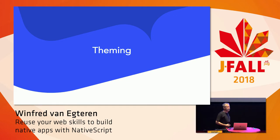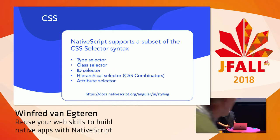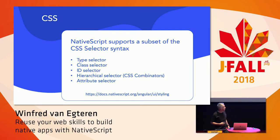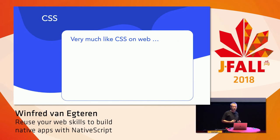Now you know how to build your user interface — it's time to apply styling. Styles can be set on three different levels: application-wide, component-specific, and inline styling — exactly the same as on the web. NativeScript supports a subset of CSS. Most of it is supported, including animations and gradients. You can use element types like button or image, classes, and IDs, and CSS combinators to style siblings of elements — very much the same as on the web.